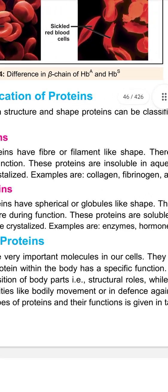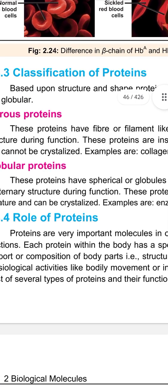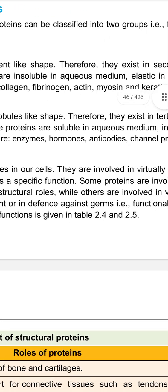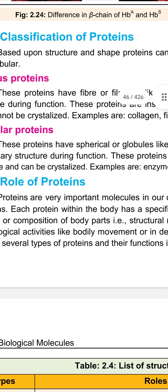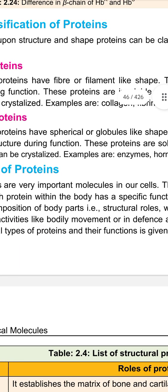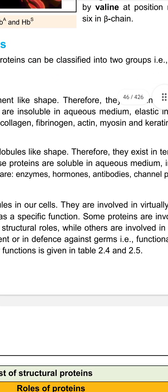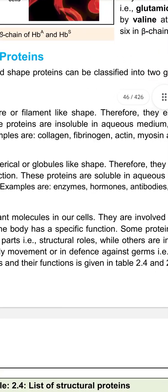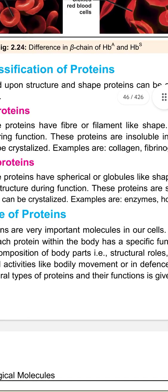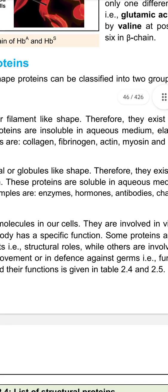Globular proteins have a spherical or globule-like shape; therefore they exist in tertiary or quaternary structure during function. These proteins are soluble in aqueous medium and can be crystallized. Examples of globular proteins include enzymes, hormones, antibodies, and channel proteins. These proteins are involved in virtually all cell functions — some have structural roles, others are involved in physiological activities like bodily movement or defense against pathogens — these are functional roles.